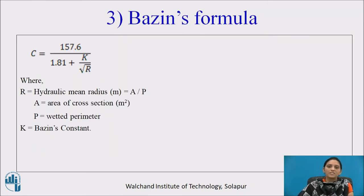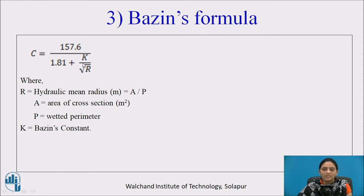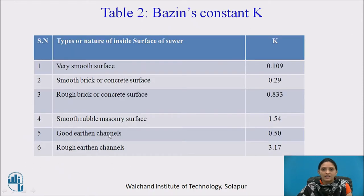Bazin's formula: C is equal to 157.6 divided by (1 + 81 + K) divided by the square root of R. Bazin also gave Chezy's constant C, where K is Bazin's constant. Table 2 provides the chart for K. There are various types of surface listed, and the table gives the guideline values of K accordingly.